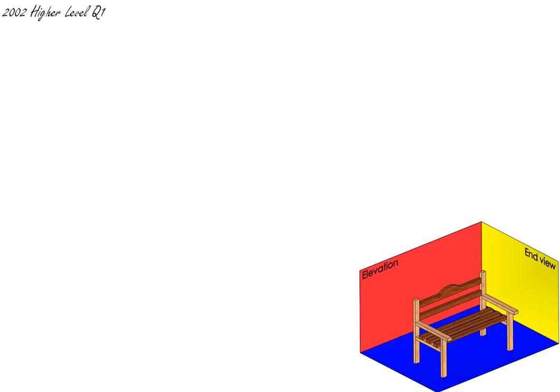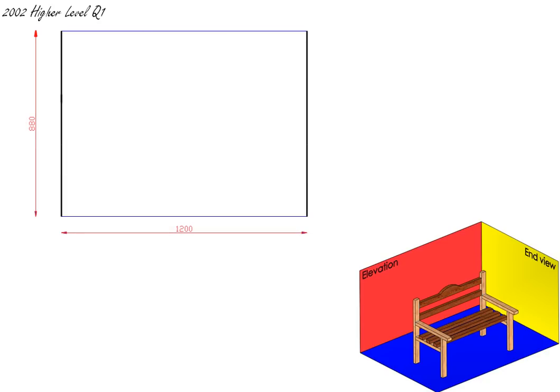The next thing we'll do is box in our views. I want to box in my elevation first. The elevation is 1200mm in width and 880mm in height. So on your actual page, that's going to be 120mm from here to here and 88mm from here to here, as our scale is 1 to 10.